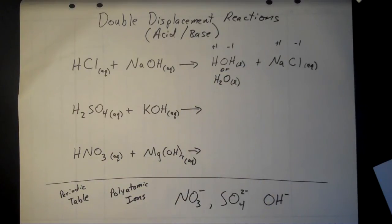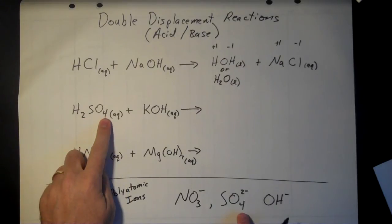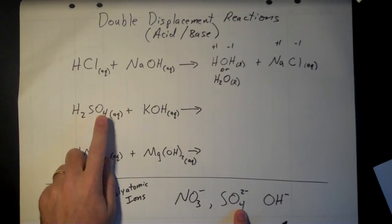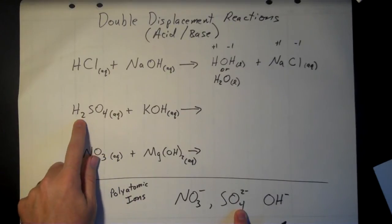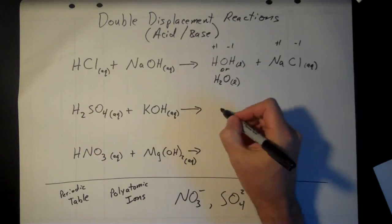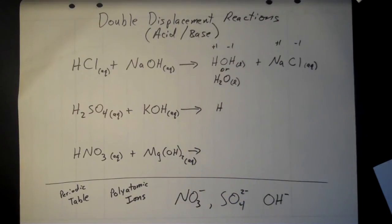For the second reaction, just like with double displacement precipitation reactions, we're going to leave any subscripts behind unless they're part of a polyatomic ion — like the four in SO₄, which stays. The two outside the parentheses we leave behind at first, because you may not need it.